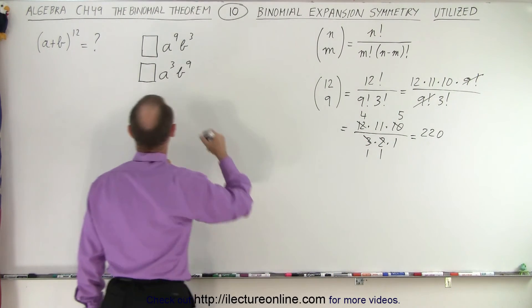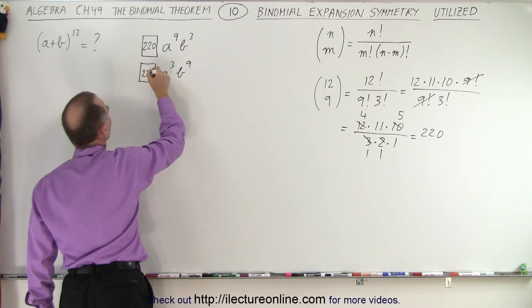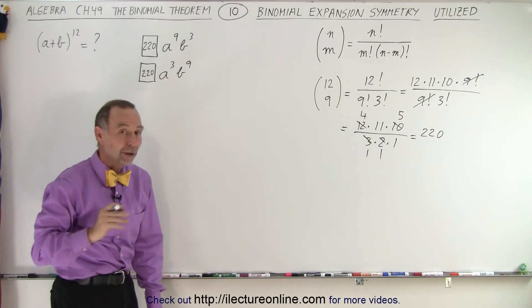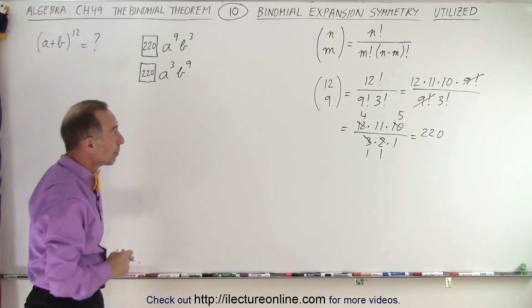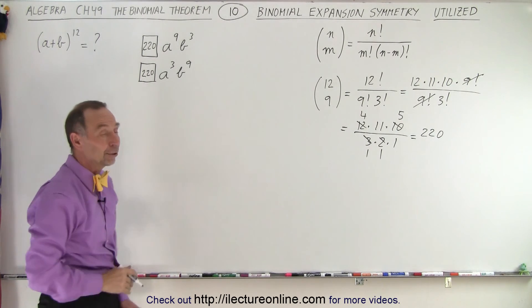And that will then be the numerical coefficients of both of these terms because the symmetry tells us that they must have the same numerical coefficient. And that's what we mean by the symmetry seen in the binomial expansion.